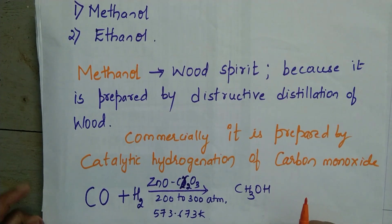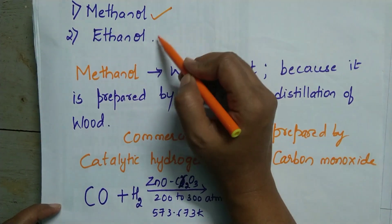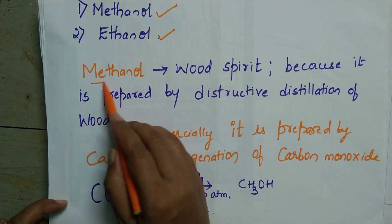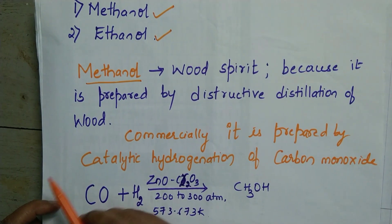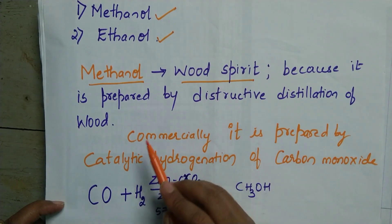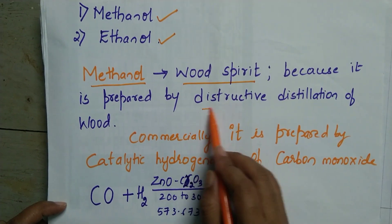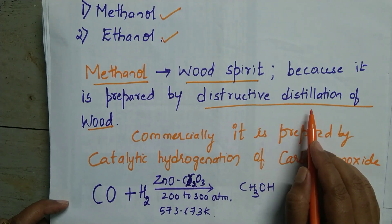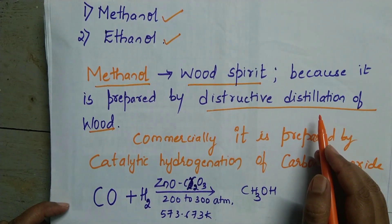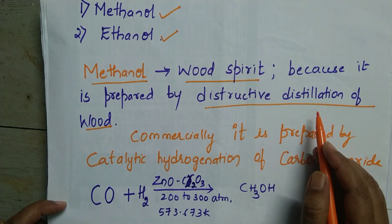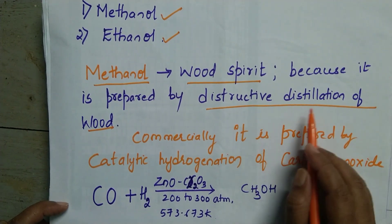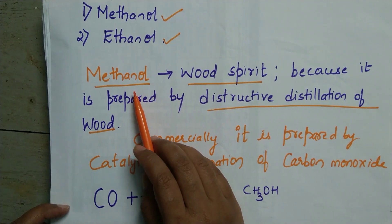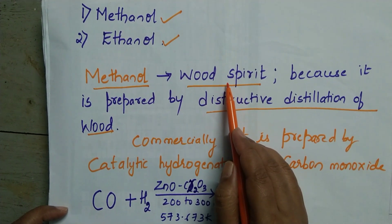Some commercially important alcohols are methanol and ethanol. Methanol is also called wood spirit because it is prepared by destructive distillation of wood. You heat wood and subject it to distillation, and you end up with methanol — hence the name wood spirit.